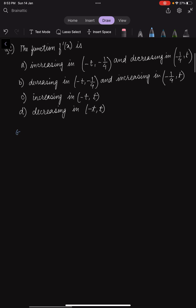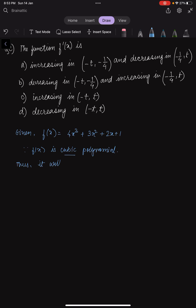What we are given is f(x) = 4x³ + 3x² + 2x + 1. Since f(x) is a cubic polynomial — the highest order of x is cube — this implies it will have at least one real root. This statement is very important: since f(x) is a cubic polynomial, it should have at least one real root.